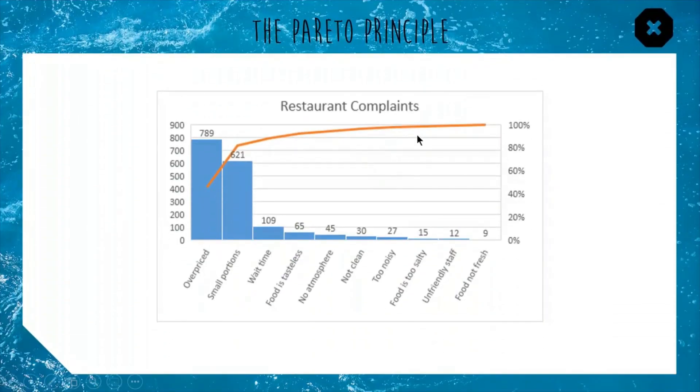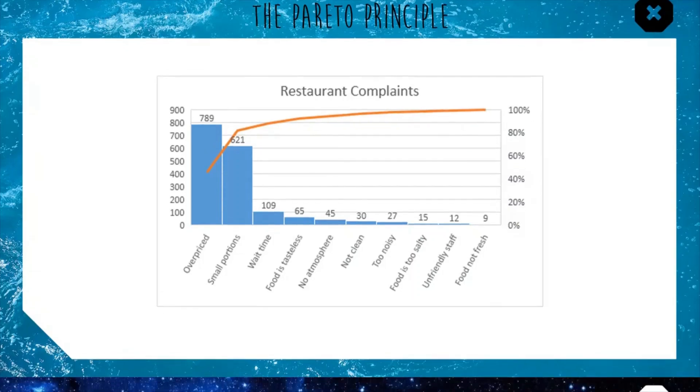This one you can see, this is restaurant complaints, we have a number of complaints but as we can see two of them are causing most of our percentage total. So what we can extrapolate for this restaurant is that yes you have lots of different complaints but if you just address these two areas, your price and your portions, you can reduce your overall complaints by 80 roughly. So that's the logic, it's just trying to see which one of your categories is doing the heavy lifting, showing it with a line essentially.